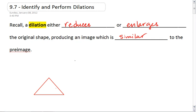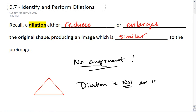The important thing is that these shapes are not congruent, which means for the first time we're encountering a transformation that is not an isometry. So dilation is not an isometry.